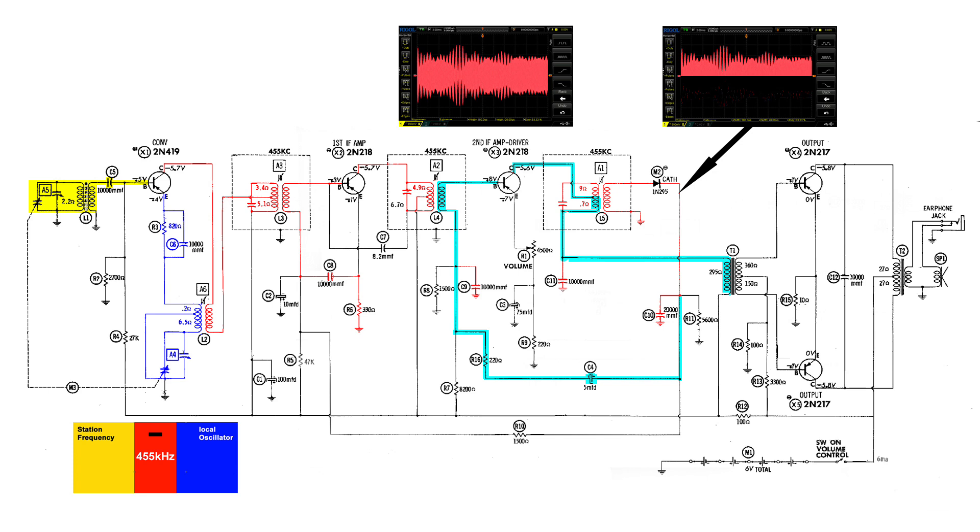C11 is draining off any 455 and the audio continues over to the audio transformer driver, which is iron core so RF can't get through that. At this point we're going to start into a push-pull amplifier.